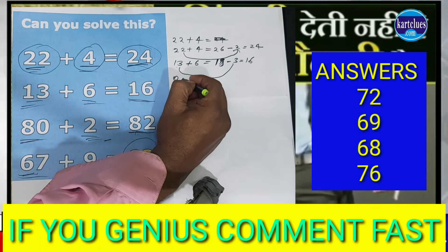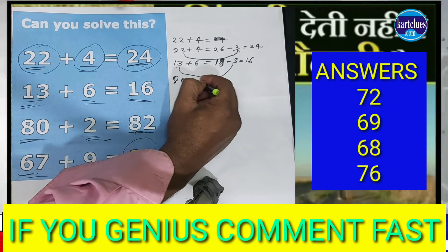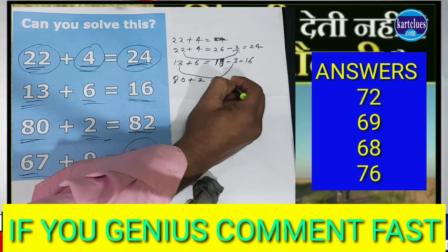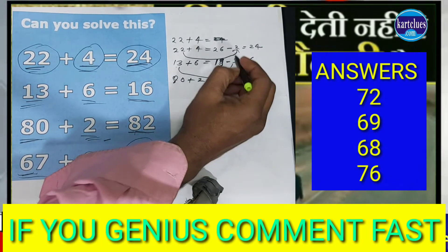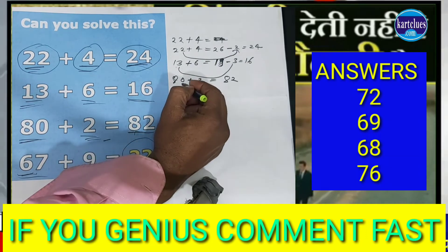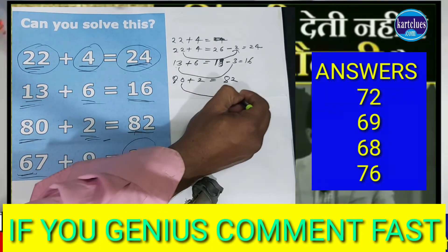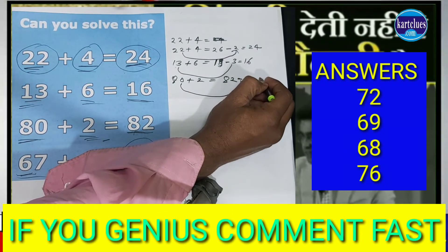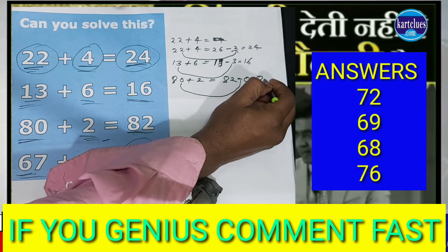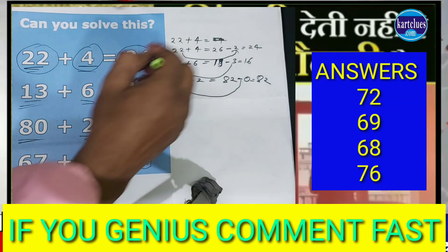And here 80 plus 2 is 82. See here, this one is going to minus 0, which means 82 stays the same. Same pattern here.